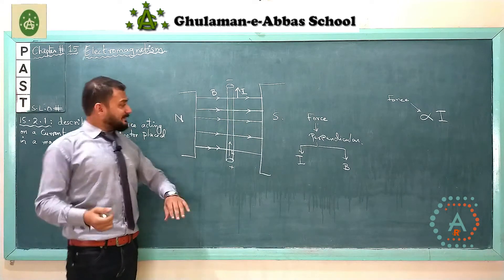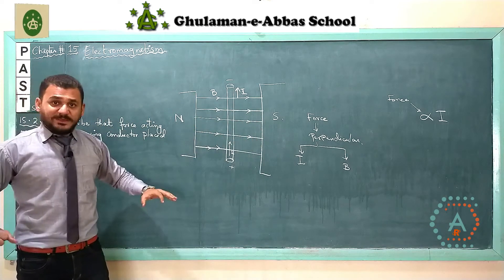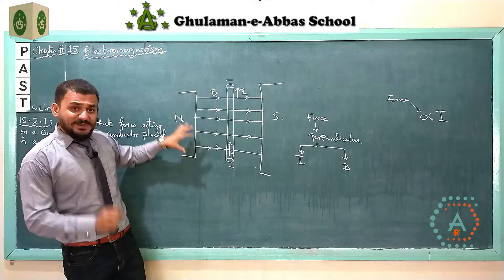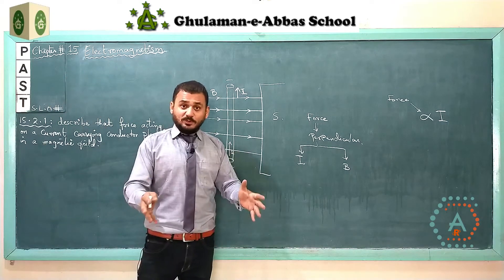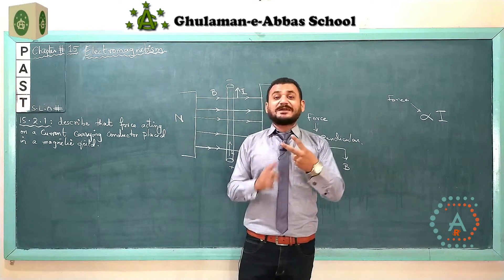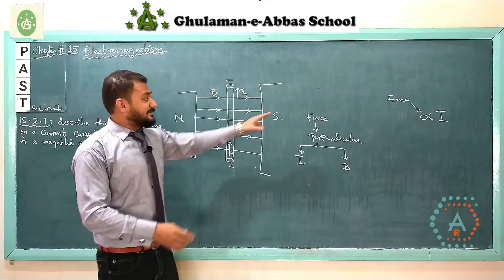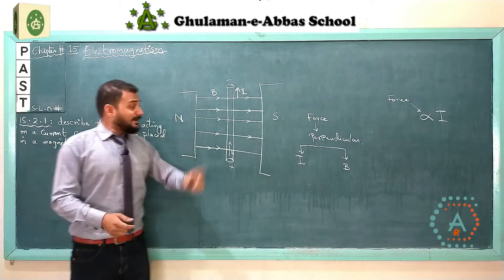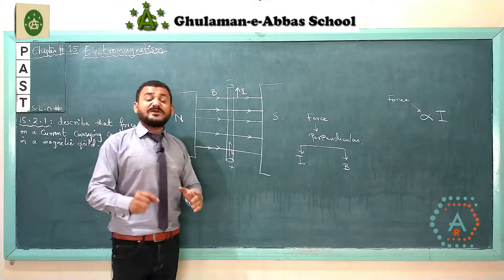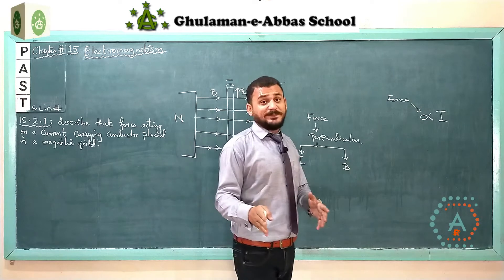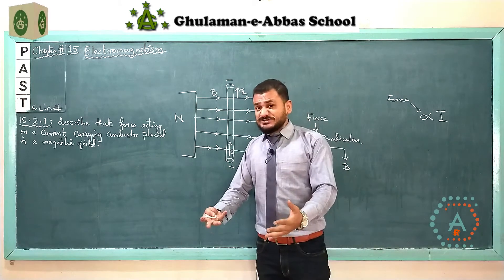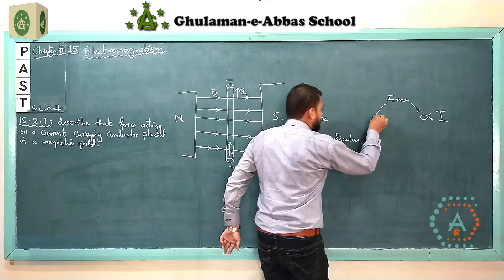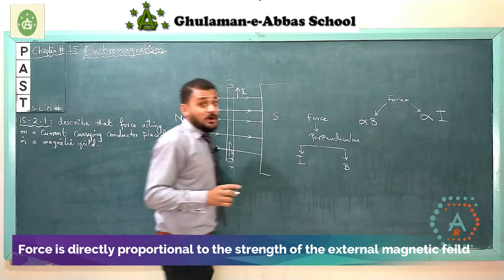Similarly, if we remove the two magnets from here, again we will have only one magnetic field — that of the current-carrying conductor. The external magnetic field will no longer be there, so there will be no interaction between the two magnetic fields, and therefore there will be no force. This means the force generated on the current-carrying conductor depends on the strength of the external magnetic field. The greater the strength of the external magnetic field, the greater the force applied on the current-carrying conductor. This force is directly proportional to the strength of the magnetic field.